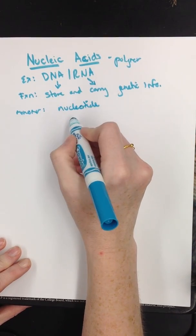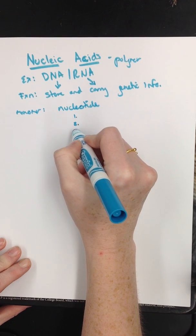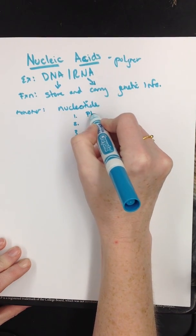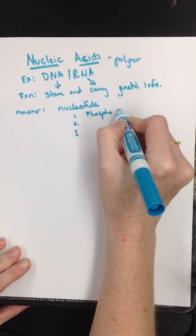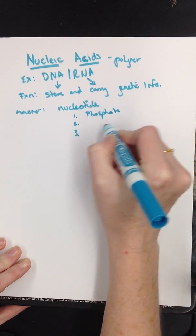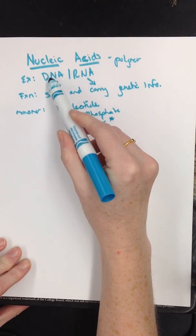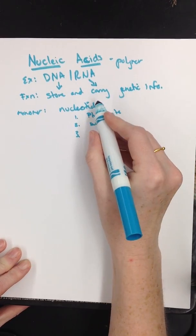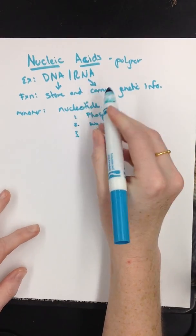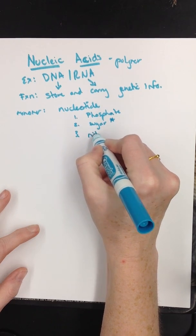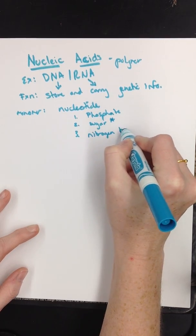A nucleotide is made of three parts. My first part, the very outside, is a phosphate group. The second part is a sugar, and I'll put a star next to it, because the sugar is going to be different between DNA and RNA. And then the last thing are my nitrogen bases.